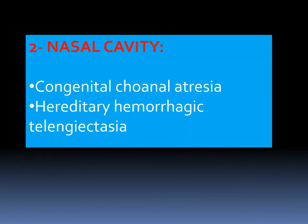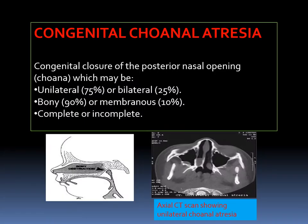Moving from the external nose to the nasal cavity, we have congenital choanal atresia and hereditary hemorrhagic telangiectasia. Choanal atresia is closure of the posterior nasal opening (the choana). It may be unilateral (75%) or bilateral (25%), bony in 90% of cases or membranous in 10%, and complete or incomplete.